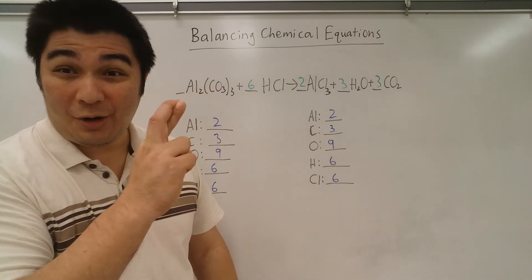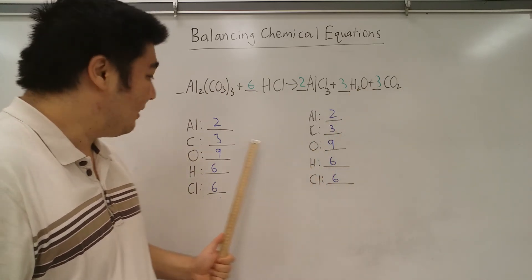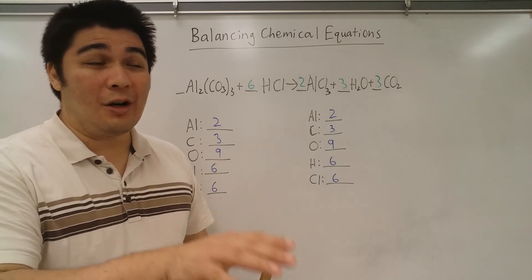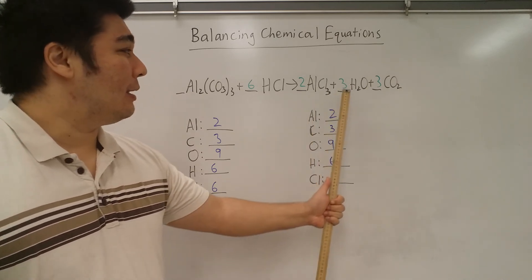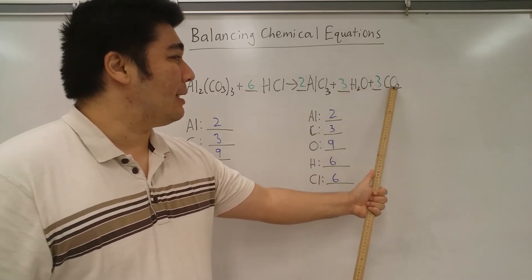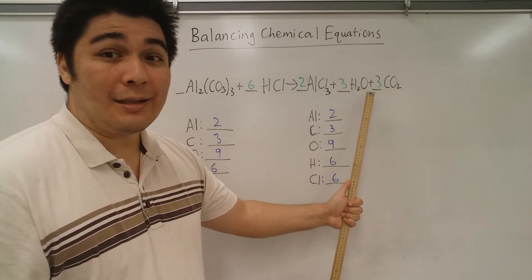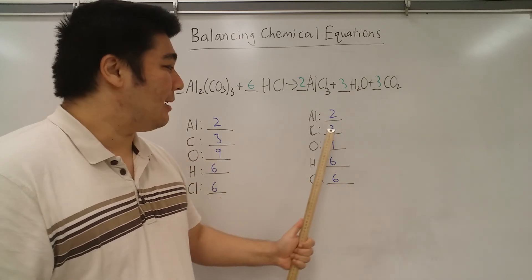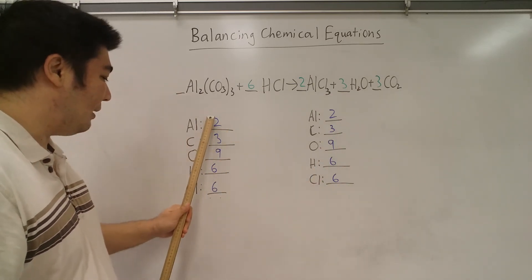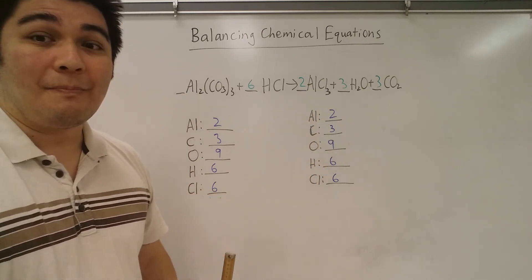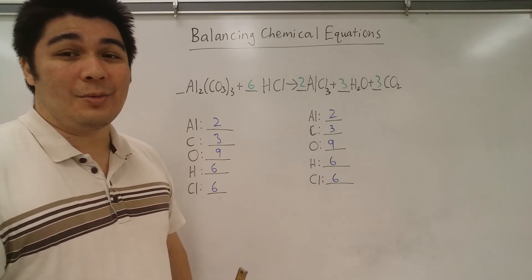Because if the oxygens don't balance—if I don't get nine like I did on this side—something's wrong and I have to start over. So we look at this and go, all right, here we go: three times two oxygens is six, and then three times one is three. Three plus six is nine, so we've balanced everything. Everything on this side and everything on this side balances out completely, so we have a completely balanced equation, and that is really good.